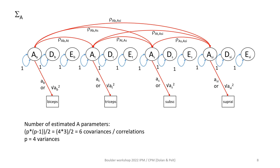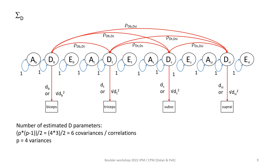Obviously we can do this for sigma A, and we can also do this for sigma D. This isn't really adding anything new, because sigma D is also four-by-four, containing four variances and six covariances. In the path coefficients representation, we get the four path coefficients d_b, d_t, d_s, and d_si, and the six correlations shown on the top.